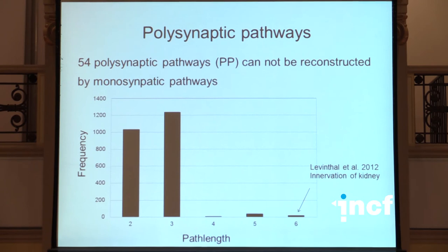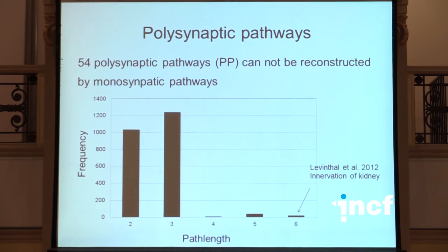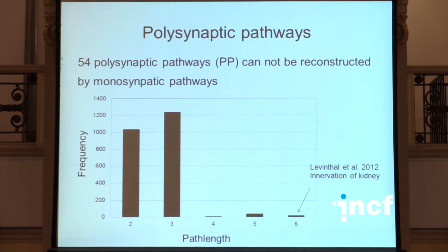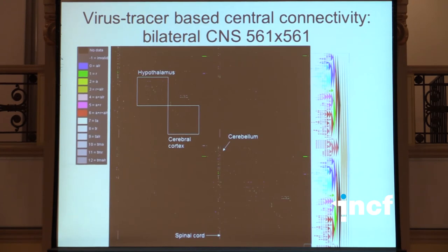The next new type of connectivity data are polysynaptic pathways. These polysynaptic pathways are in most cases investigated by applying pseudorabies virus injections, and in most cases in the peripheral nervous system. We found 1,200 paths which have a path length of three — meaning they connect three neurons by two synapses — but there are also some pathways which are quite longer, for example described by Leventhal after applying pseudorabies virus into the kidney to investigate the efferent connectivity of the kidney to the central nervous system.